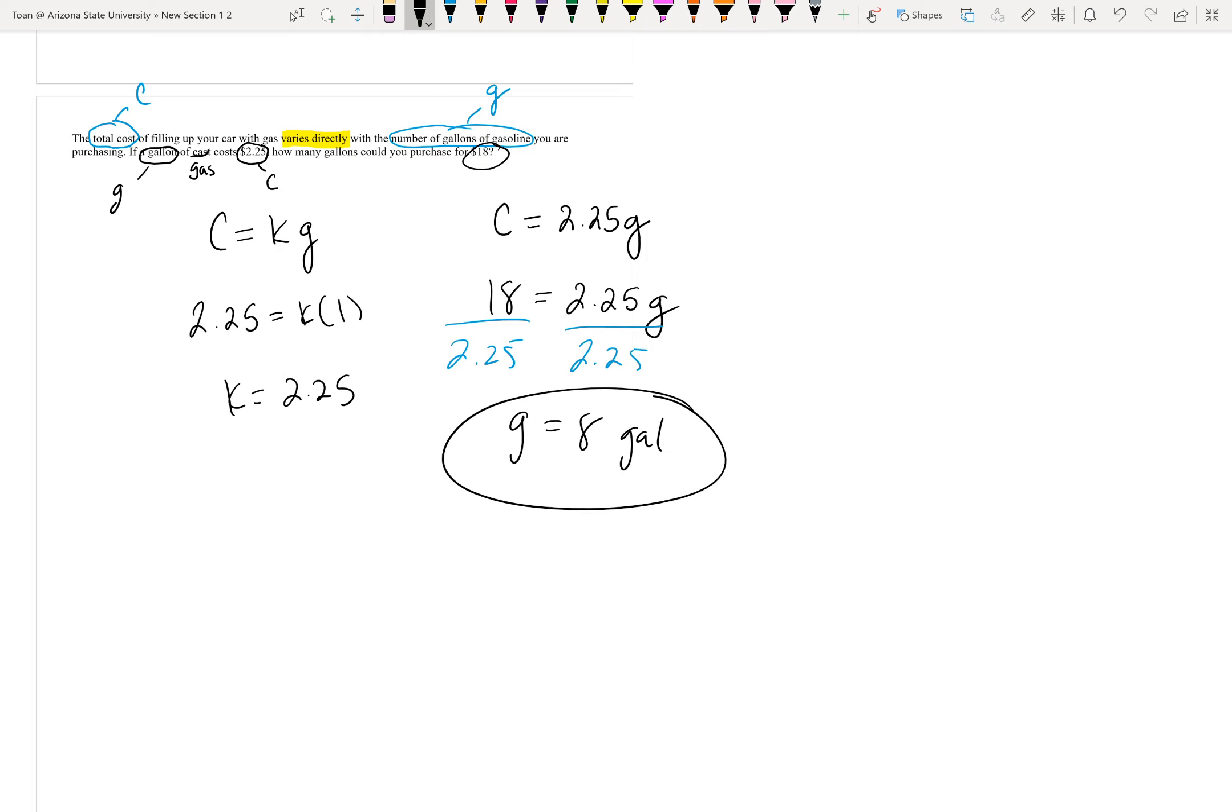So when it comes to these direct variation problems, you're looking for that key phrase, varies directly, is directly proportional along those lines. And if you do read that phrase, just set up the equation. One variable equals k, the other variable.